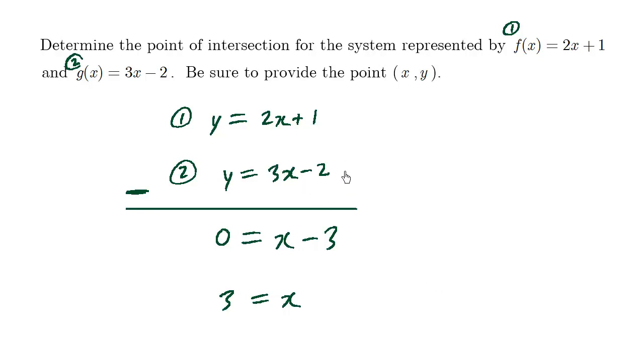Just be careful on this part here, negative 2, subtract the top equation. Subtracting a positive number makes it negative 2, negative 1. So that's why we have negative 3. So we have x equals 3.